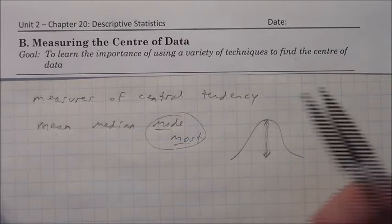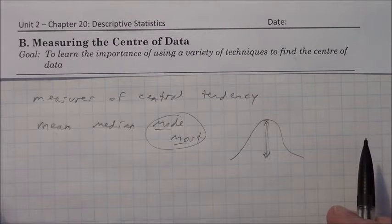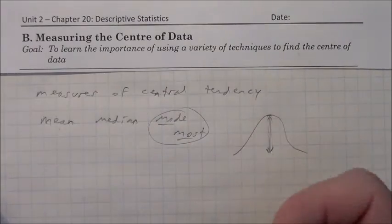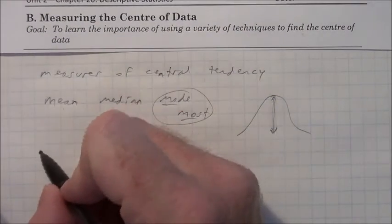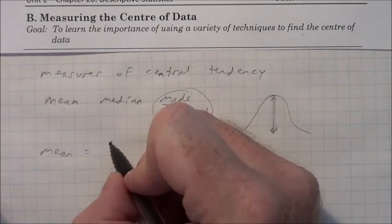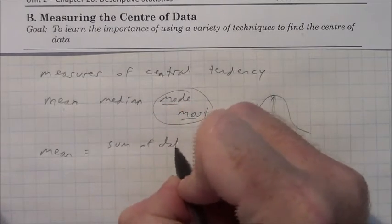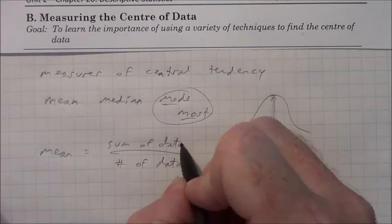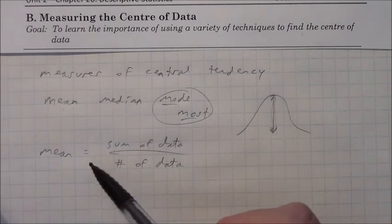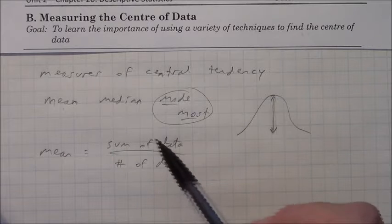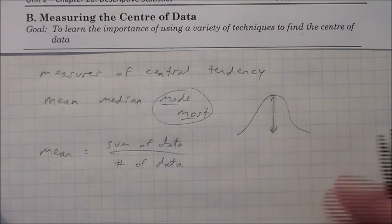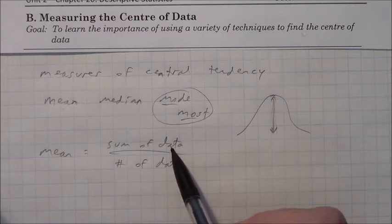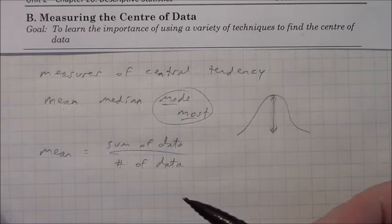The mean is like the average. If we have a large group of numbers — or any group of numbers — the mean is the sum of all the data values over the total number of data values, so the sum over the total. Usually the mean does not end up being one of the data values. A lot of times it'll turn out to be a decimal, and a lot of times you'll be working with data values that are integers or whole numbers.